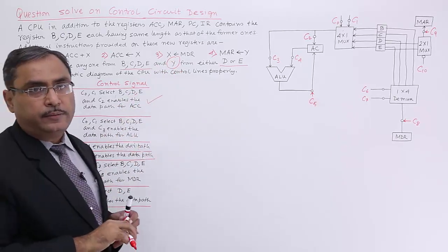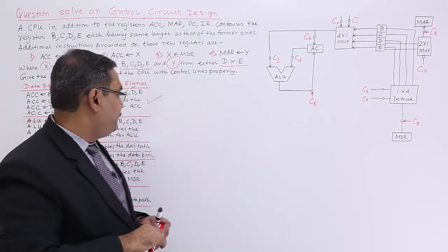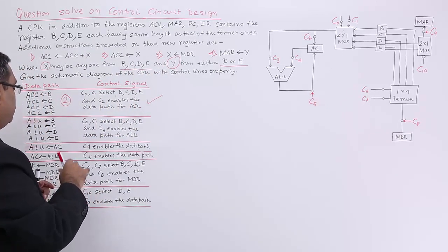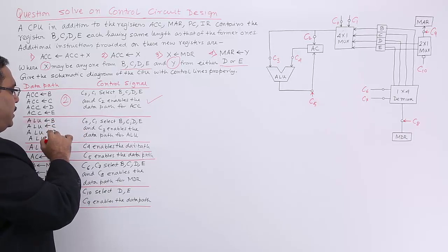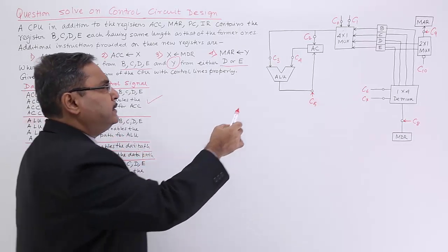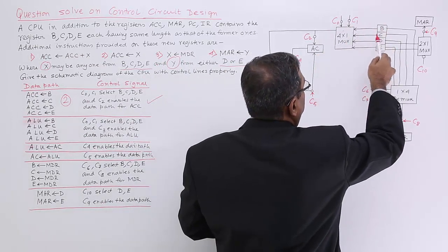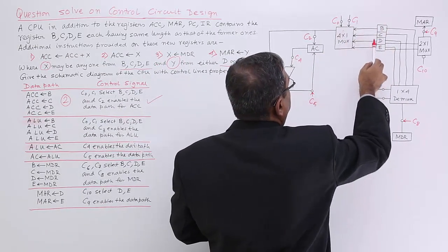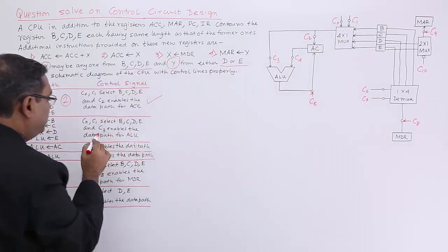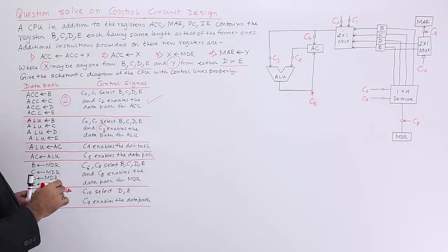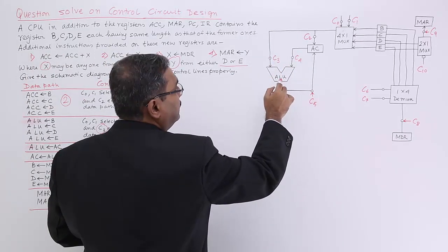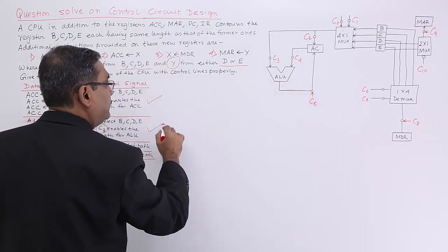Now for the operation where ALU input equals one of BCDE — any one of the registers will be coming to the ALU. Again, C0 and C1 will decide which register will come, and C3 will enable the path to the ALU.